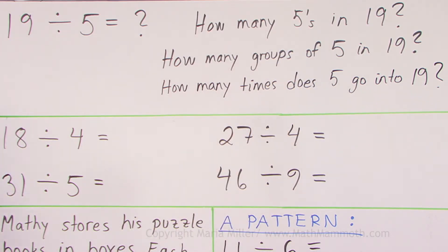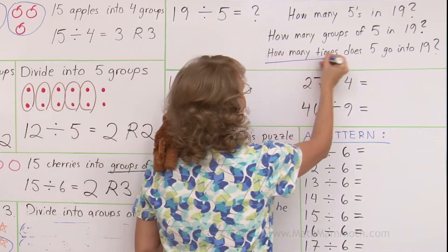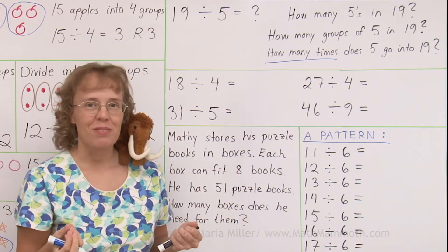Or, how many groups of 5 can you get out of 19 kids? Or, how many times does 5 go into 19? We're going to use multiplication.